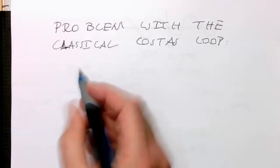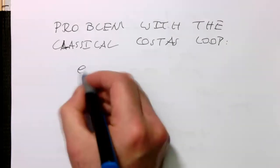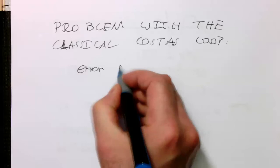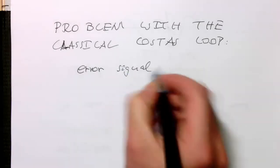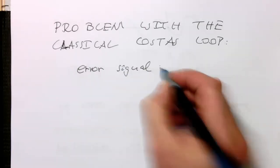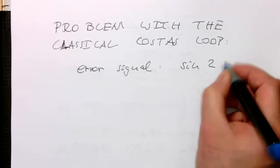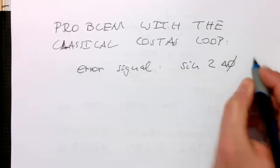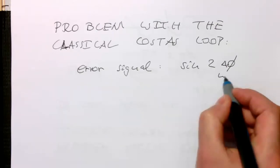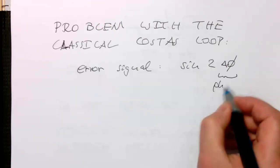So remember the error signal, the error signal which drives the VCO. This was sine of 2 delta phi, and delta phi, this was the phase error.